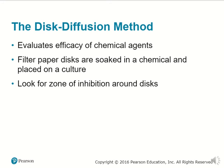The disc diffusion method evaluates the efficacy of chemical agents. A filter paper disc is soaked in a chemical and placed on a culture. Researchers then look for a zone of inhibition around those discs where cell growth is halted and no longer occurring.